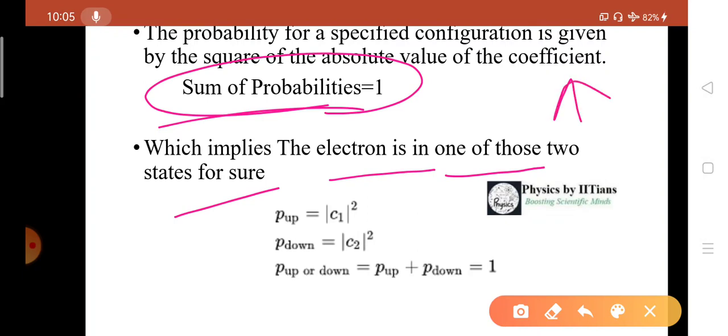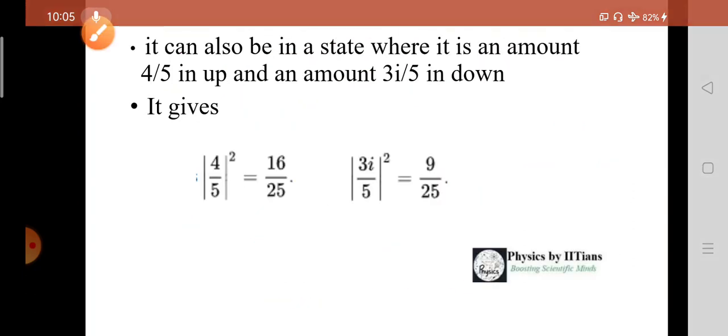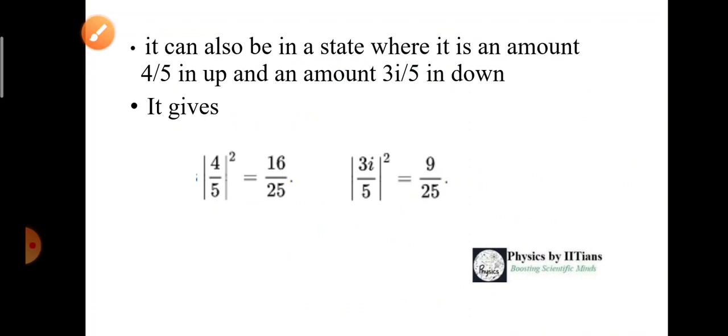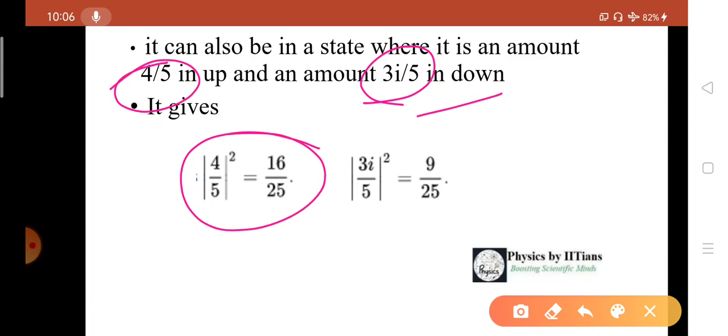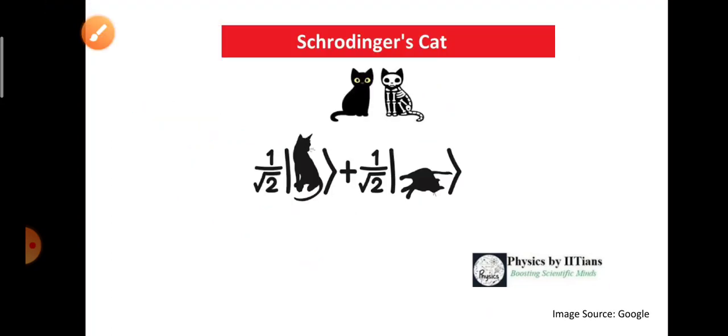When you measure, it will be either in the spin-up state or spin-down state. The probability for spin-up is mod of C1 square and probability of spin-down is mod of C2 square. The total probability, P-up plus P-down, should equal 1. It can also be in a state with 4 by 5 amount in up spin and 3i by 5 in down spin. The probability that it will be spin-up is mod of 4 by 5 whole square, that is 16 by 25, and for spin-down it is 9 by 25. The total probability, 16 by 25 plus 9 by 25, will always be 1.